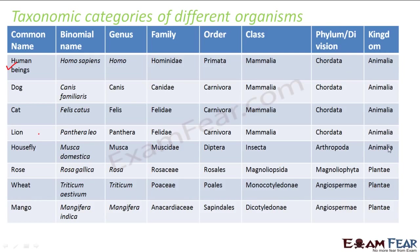Here you can see that human beings, dog, cat, lion, and housefly all fall under the same kingdom, that is Animalia. Whereas rose, wheat, and mango all fall under the kingdom Plantae. Now you can go through these yourselves and try to understand why they have been put into the same family, class, or order. I hope that this topic on taxonomy was helpful and you have actually understood the concepts.